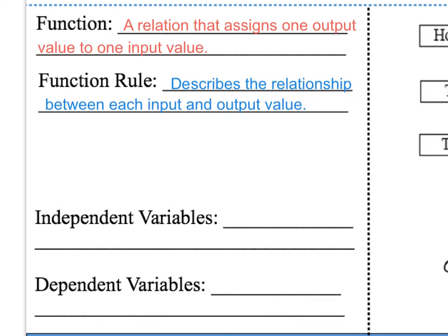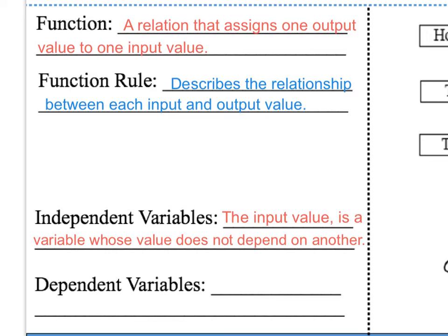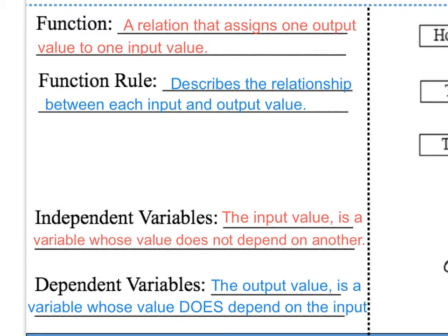Independent variables, or the input value, is a variable whose value does not depend on another. The dependent variables, or the output value, is a variable whose value does depend on the input.